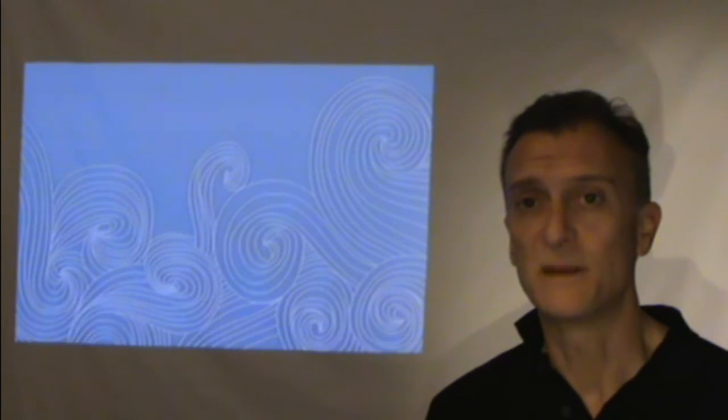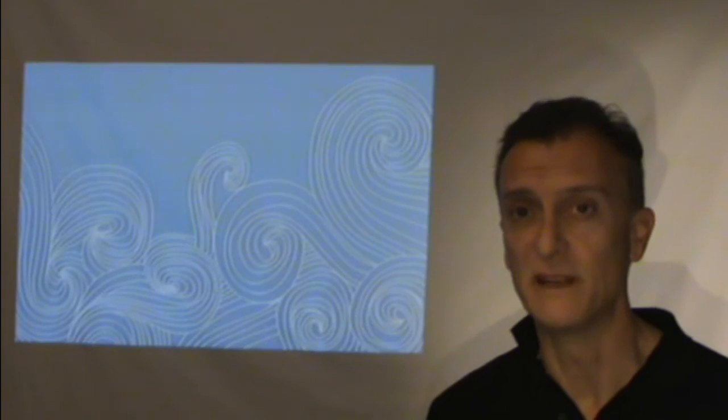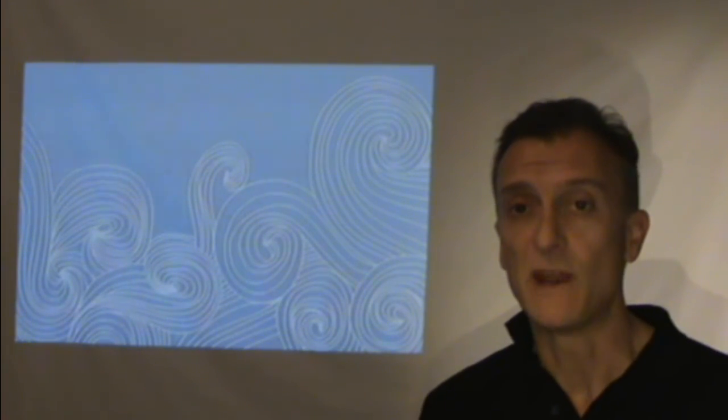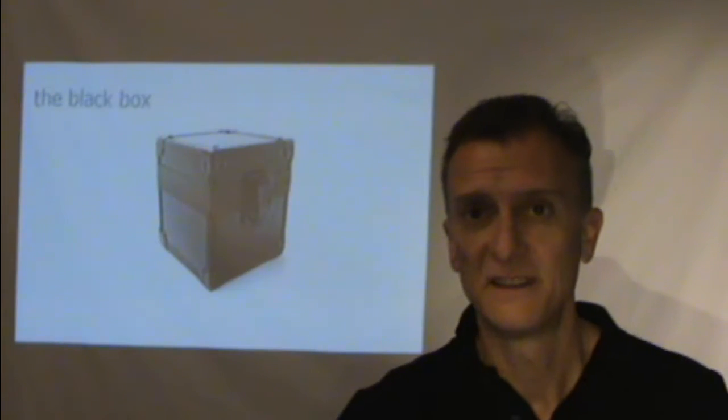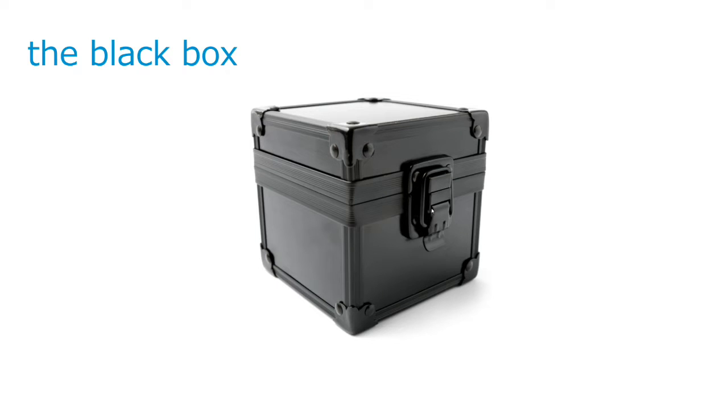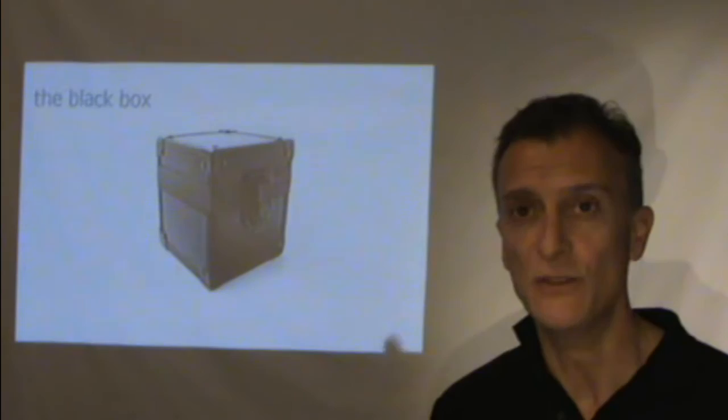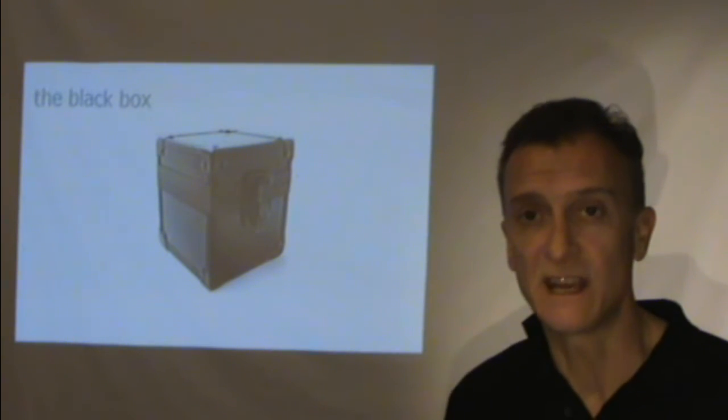Hi guys, welcome to the third class on computer control systems, now from my place. So, today we are going to talk about the black box. And the black box is about the description of the system that only takes in consideration the input and the output, not what's inside.